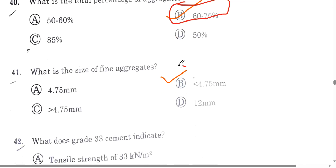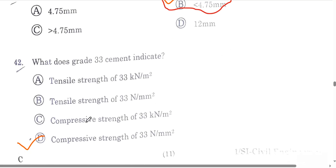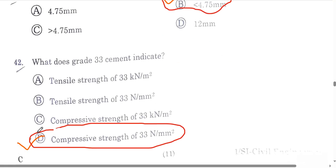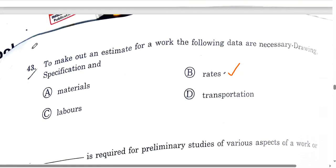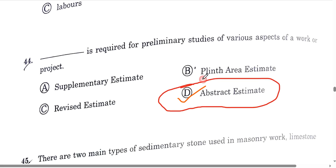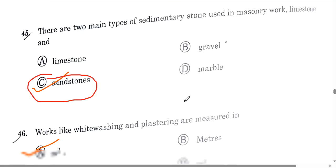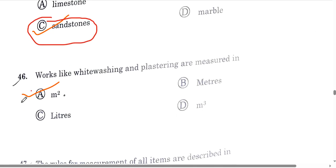The size of fine aggregate is less than 4.75 mm. Grade 33 cement indicates a compressive strength of 33 N/mm². Question number 43: to make an estimate for work, the necessary data includes drawings, specifications, and rates. Question number 44: for preliminary studies of various aspects of work, an abstract estimate is used. Question number 45: the two main types of sedimentary stone used in masonry work are limestone and sandstone.